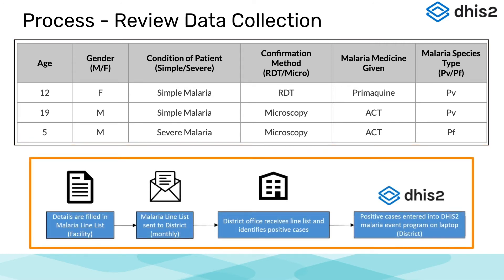By reviewing the process diagram below the line list, we can see that this form is sent to the district level every month from each facility. The district receives the data, verifies positive cases, and enters these into DHIS-2 using a laptop. At this point, the data can be reviewed in DHIS-2 to verify that all of the required source data have been captured and the program outputs can be produced.